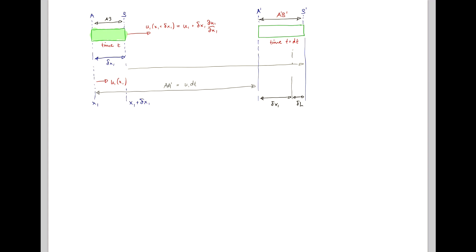whereas the front end has gone from b to b dash, which is the velocity u1 plus delta x1 du1/dx1 times dt. Now we're interested in the rate of change of the fluid element length here, per unit length,